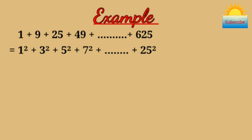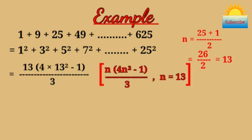Here, the number of odd numbers n is (25 + 1) / 2, which is 26 / 2 = 13. So their sum is 13 × (4 × 13² - 1) / 3.